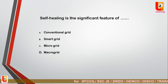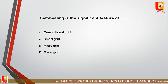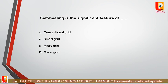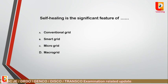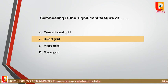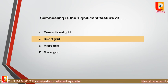Question 7: Self-healing is a significant feature of — conventional grid, smart grid, micro grid, or macro grid? Correct answer is option B: smart grid. Self-healing is the most important feature of the smart grid.